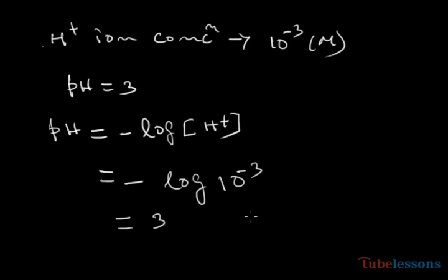If we say the H+ ion concentration is 10 to the power minus 7 molar, the pH of the solution is 7. That means the solution is neutral.